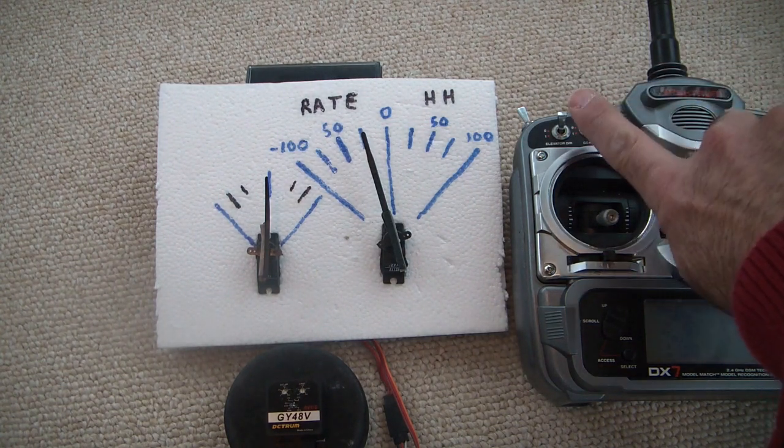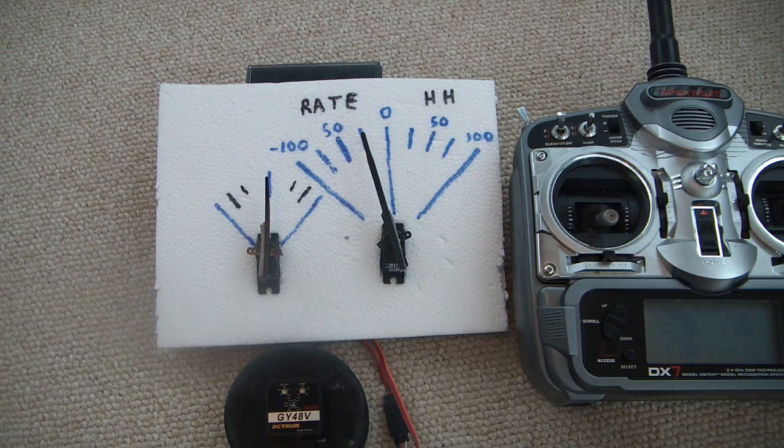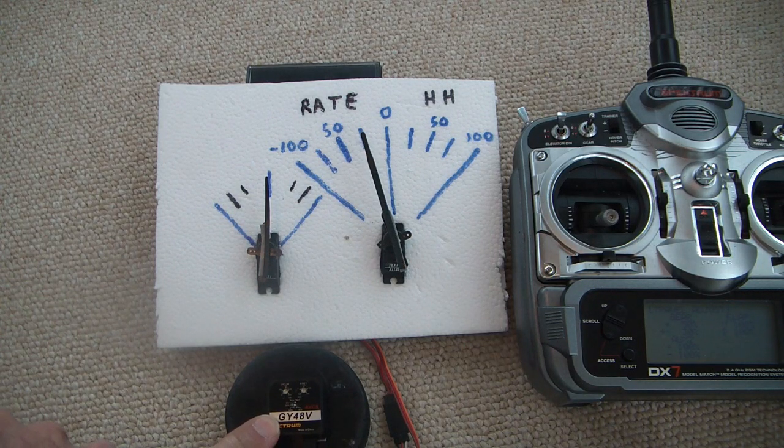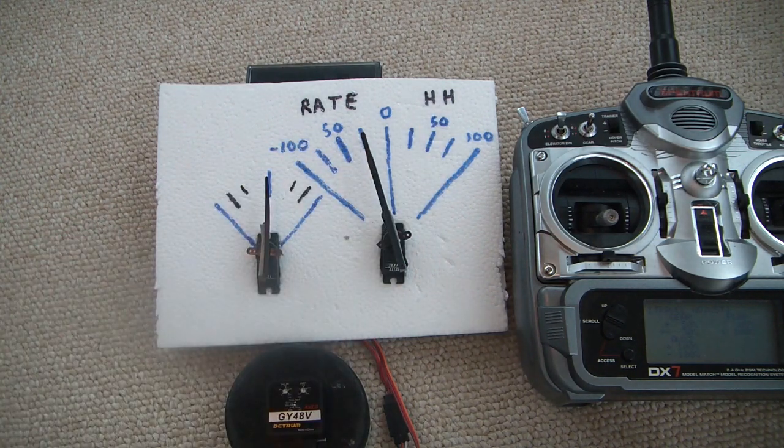So if I flip the switch, I can go back and forth between heading hold to rate mode. The gyro sees that servo position, and that's how it knows whether it's supposed to be in rate mode or heading hold mode.